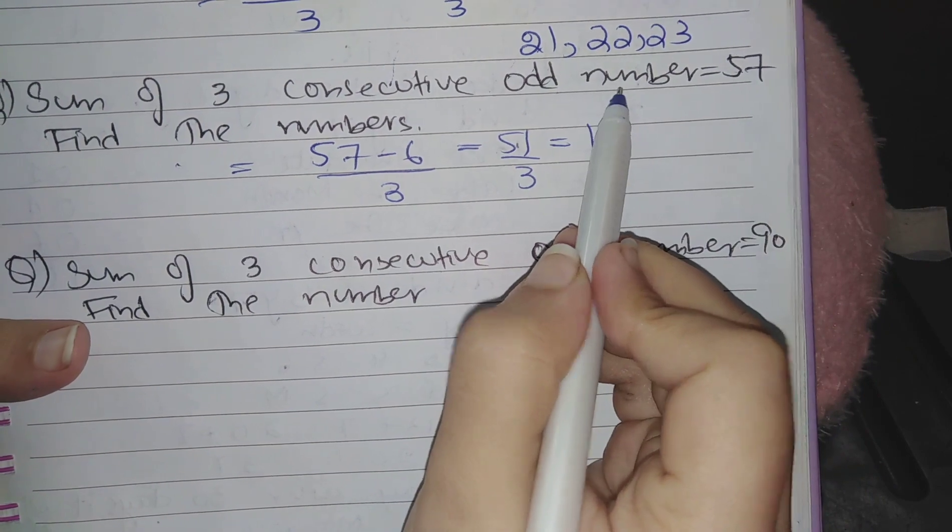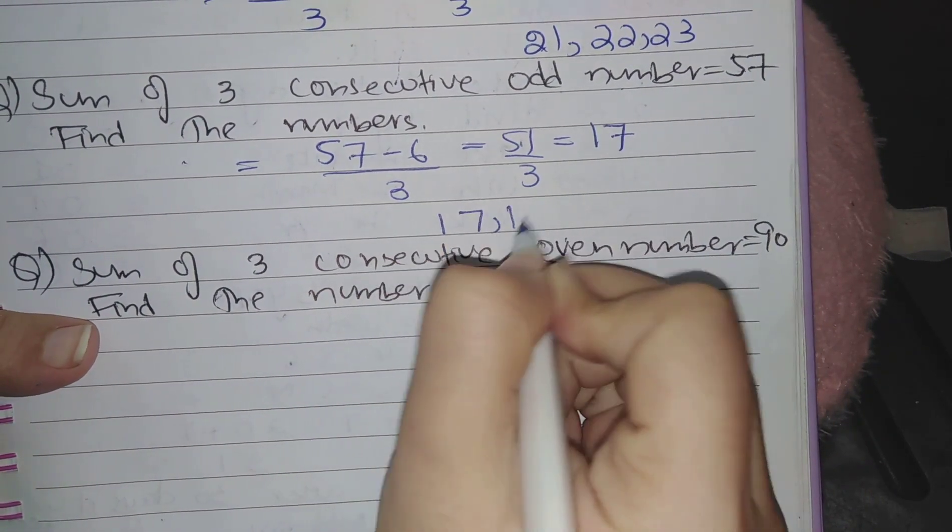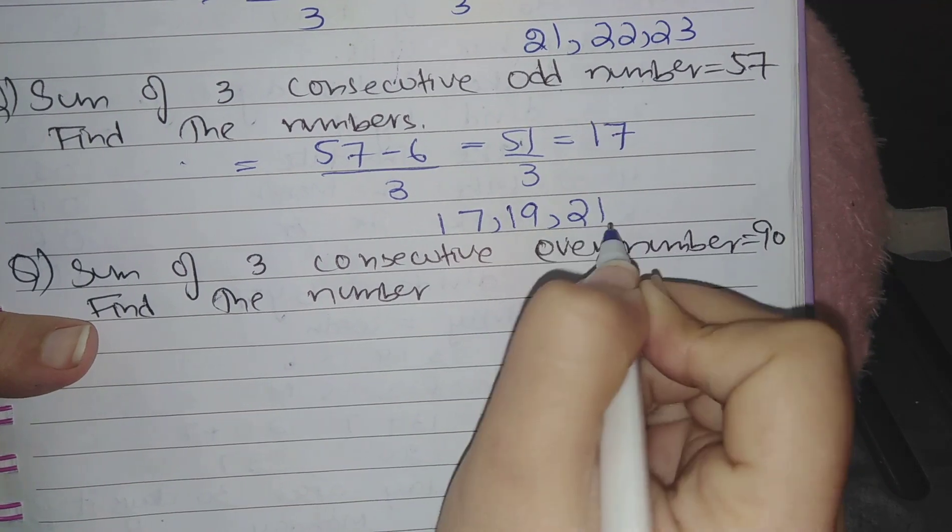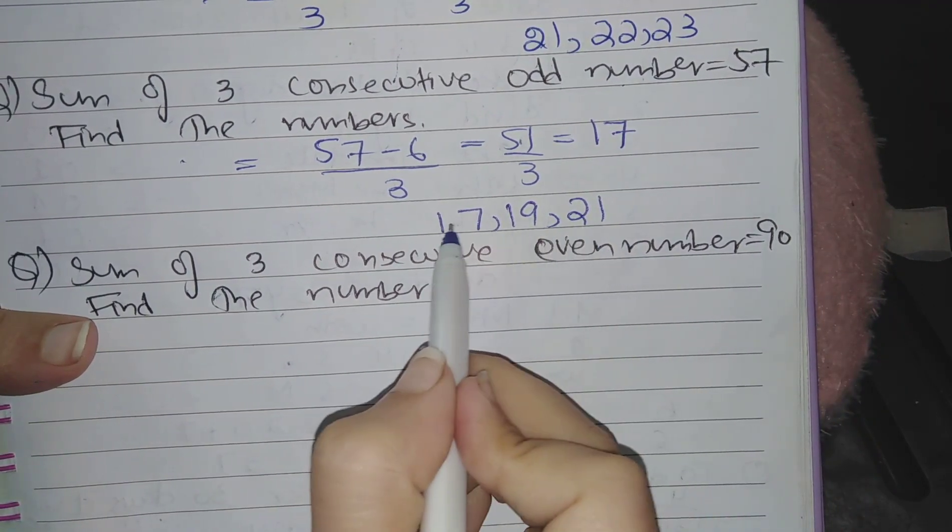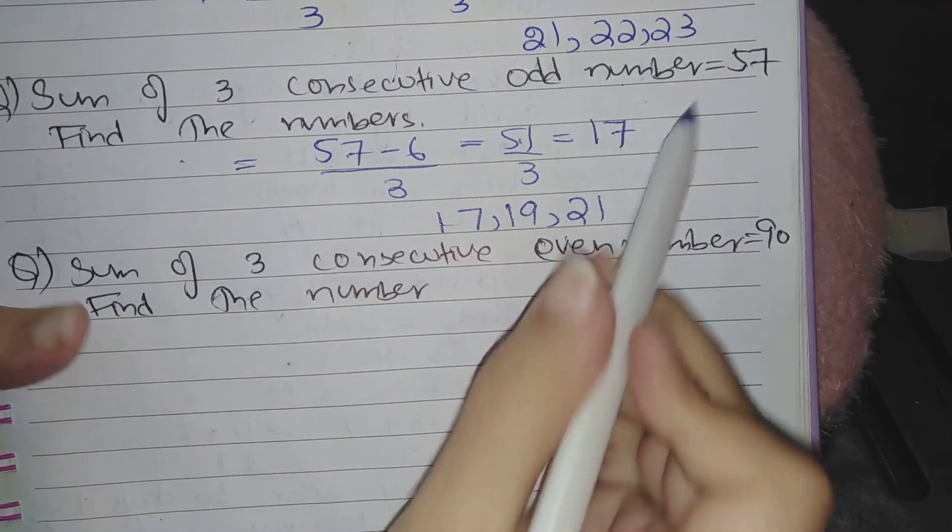As the numbers are odd numbers, first will be 17, next odd is 19, and next odd is 21. So whenever these three numbers are added the result will be 57.